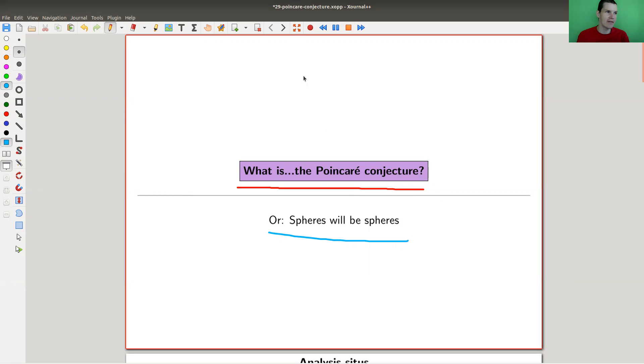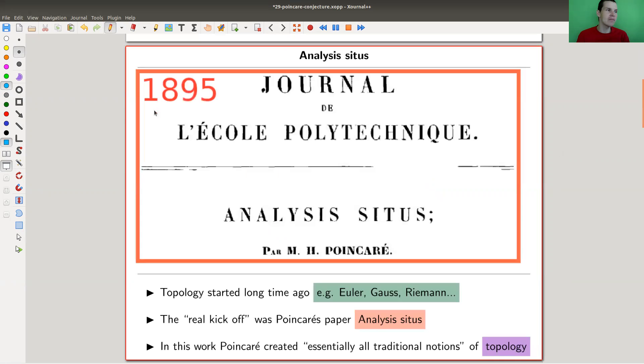So that's a famous paper - I just took a photo of an online copy from a while ago, 1895, by Poincaré. Essentially it was this one paper that was the birth of topology, or its old name.